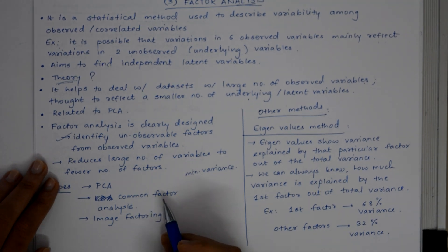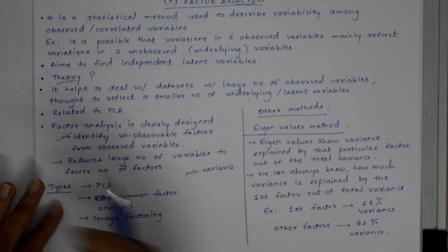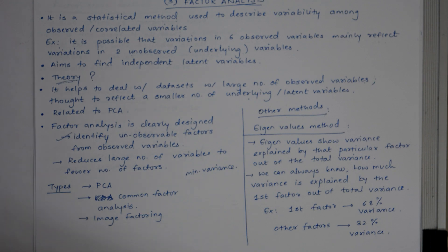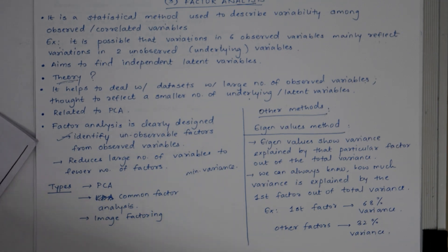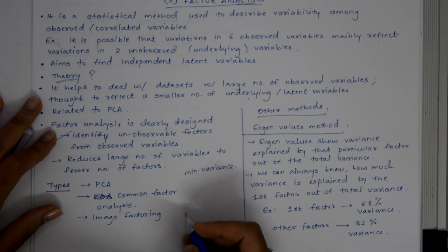This method does not include unique variance of all the variables. In case of image factoring, this method is based on correlation matrix.